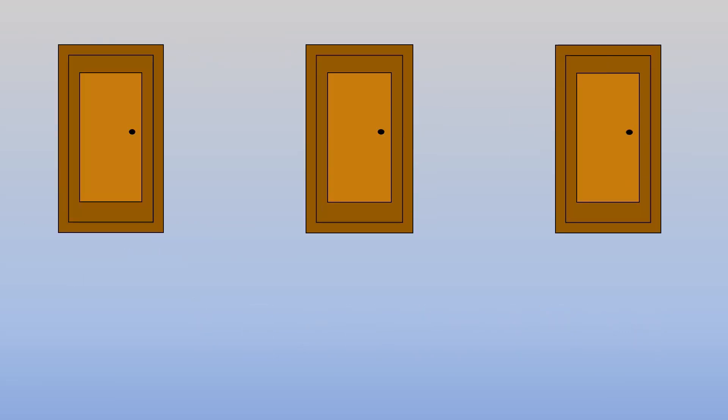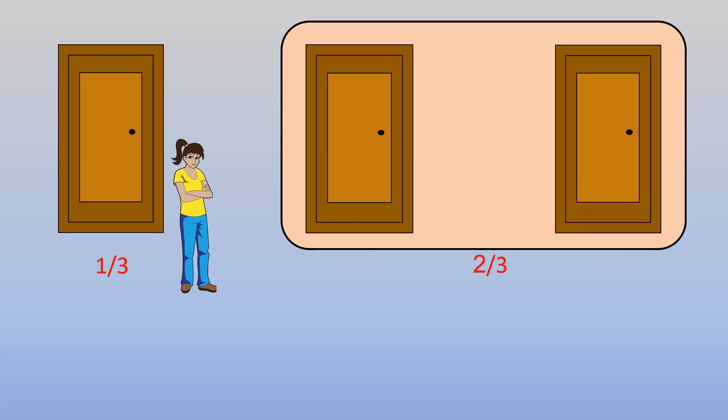I will use the same logic for the first question. In the first question, before choosing any door, the chance of winning is one third and it is equal for all the doors. Let's assume that you choose the door on the left. As I told before, the chance of winning is one third. But the more important point is that the chance of losing or actually the chance of having the car behind one of the doors that you didn't choose is two thirds. The host opens the one in the middle.